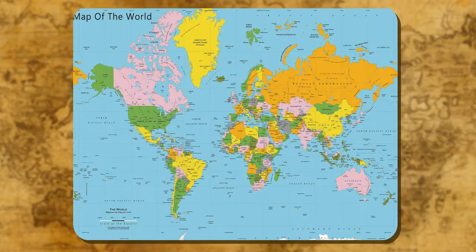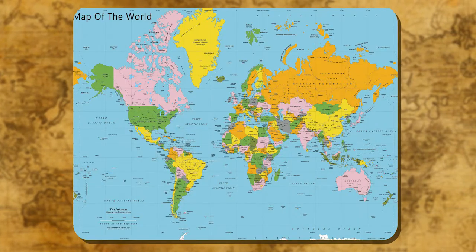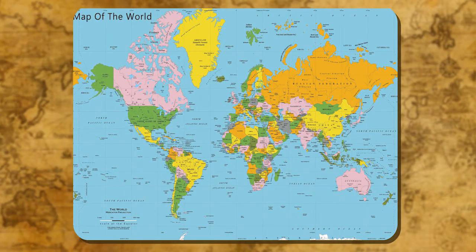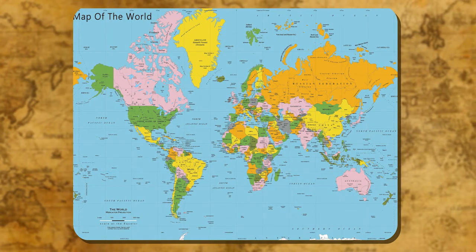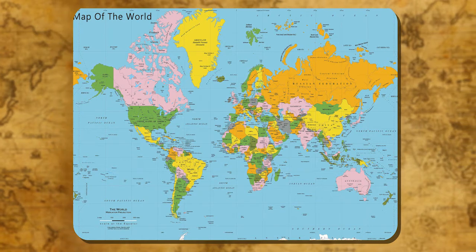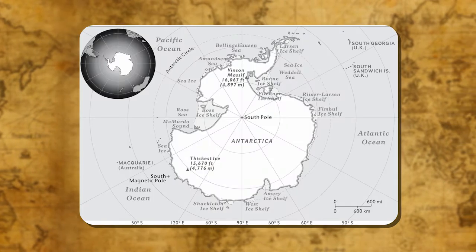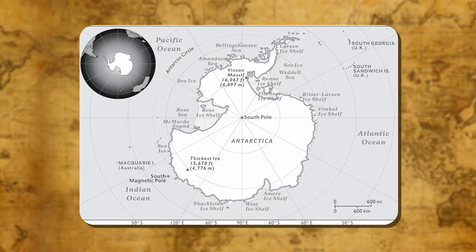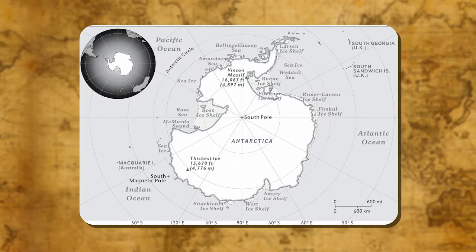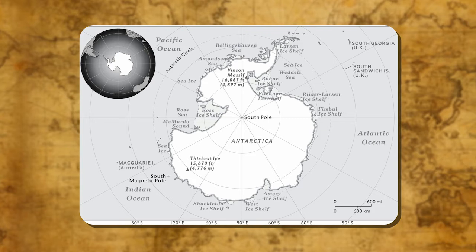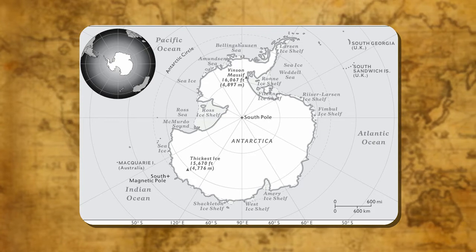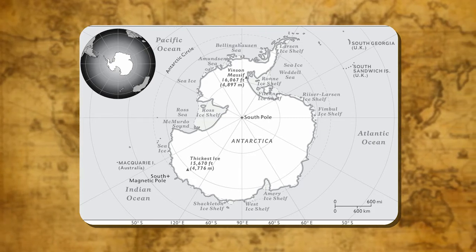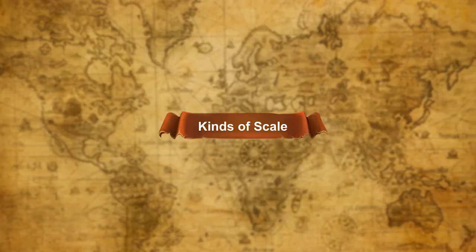Scales. Distance is a very important component of any map. A scale is chosen to show distance. Scale is the proportion or ratio between the actual distance on the ground or the earth's surface and the same distance as shown on the map.